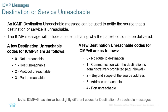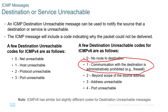A few destination unreachable codes for IPv6 are: 0 - No route to destination, 1 - Communication with the destination is administratively prohibited (for example, a firewall), 2 - Beyond scope of the source address, 3 - Address Unreachable, and 4 - Port Unreachable. Note that ICMPv6 has similar but slightly different codes. One cool thing with IPv6 is that it can tell you there is something in between you and the destination that's blocking your ICMP traffic.